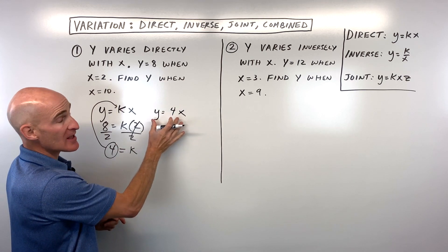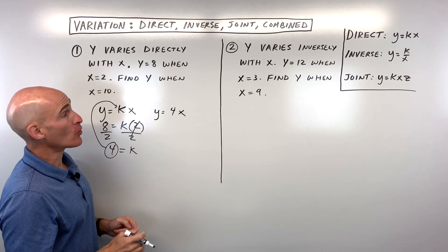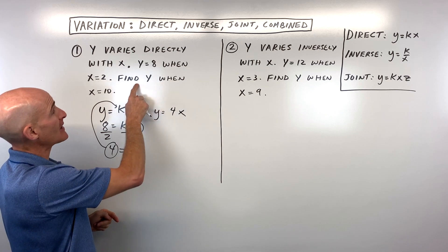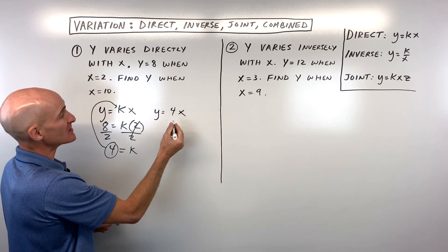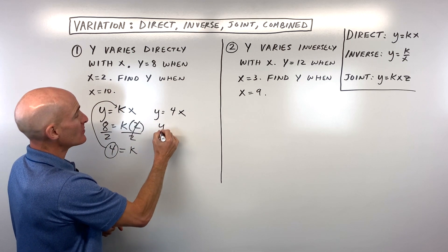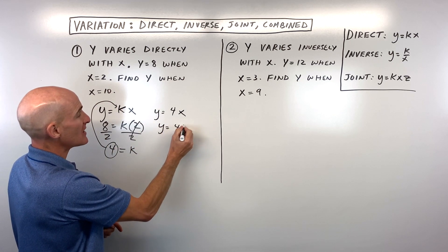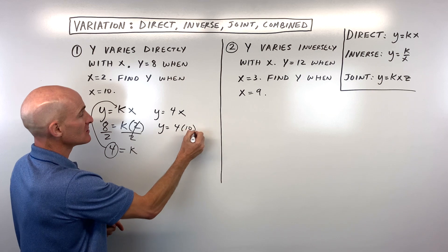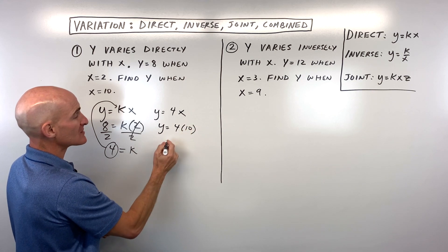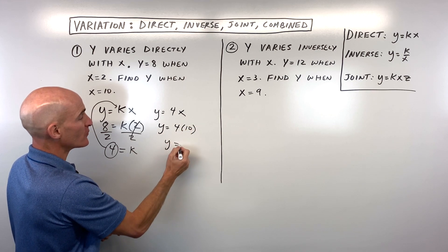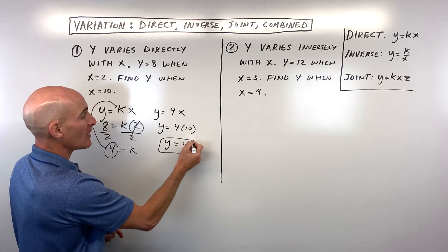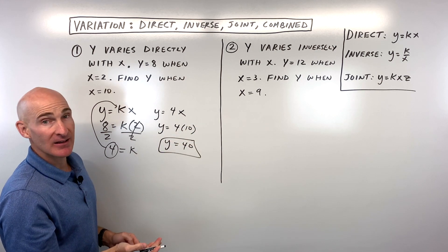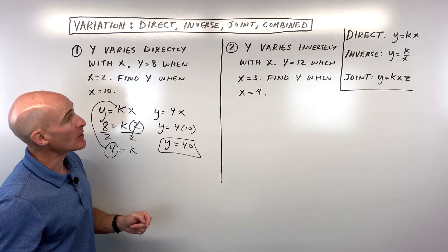Now we use that direct variation equation to find y when x is equal to 10. Substituting 10 in for x, 4 times 10 is equal to 40. Let's take a look at number 2, which is an inverse variation equation.